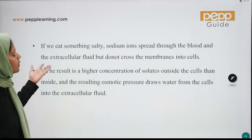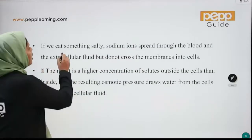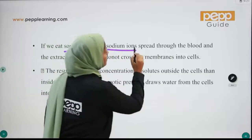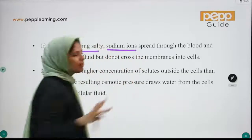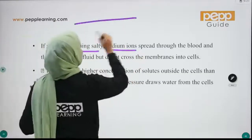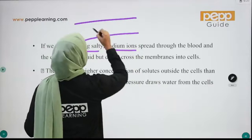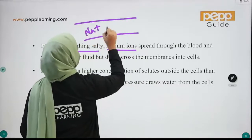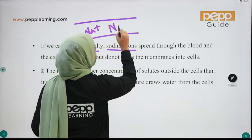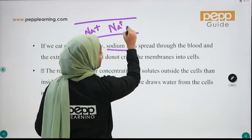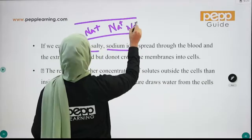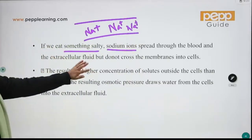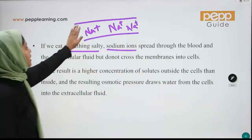When we eat salty food, there are sodium ions in our blood. Adding sodium ions to the blood increases solute concentration, but sodium ions do not cross the membranes into the cells.